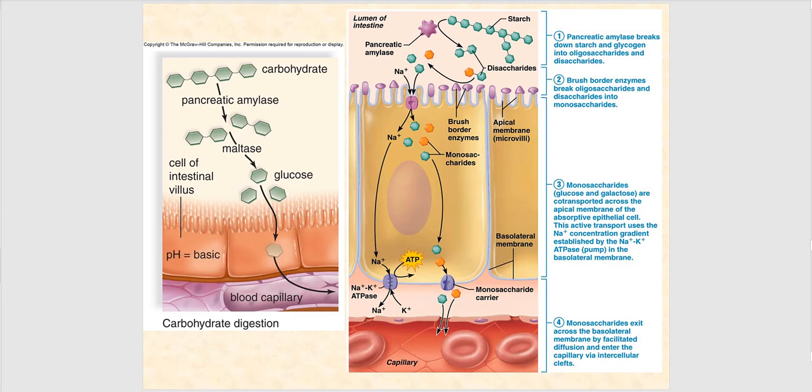Let's apply what we've discussed to what's happening in the small intestines. Ninety percent of this happens in the jejunum, the major site of chemical digestion and reabsorption, which is the middle segment of the small intestines. Here is your starch — your polysaccharide — and pancreatic amylase is going to break this into oligosaccharides and disaccharides. Maltose, the disaccharide, is illustrated here.